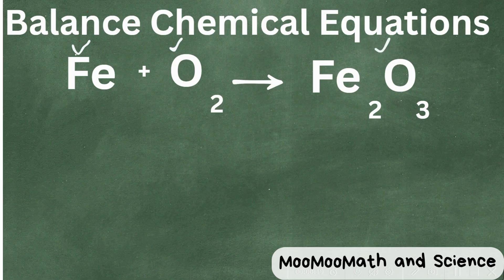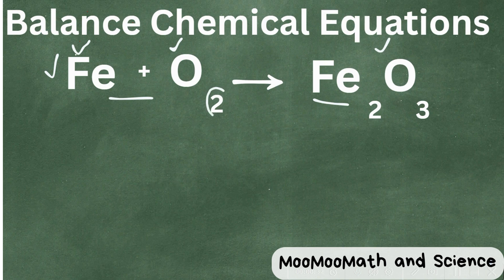Remember, we have the reactants on this side and the products on this side, and we need to count atoms. The coefficients go in front, and the subscript, like this 2 is a subscript, because it goes at the end of it.